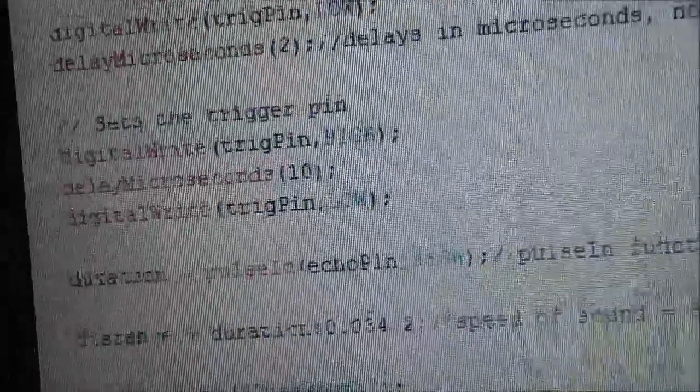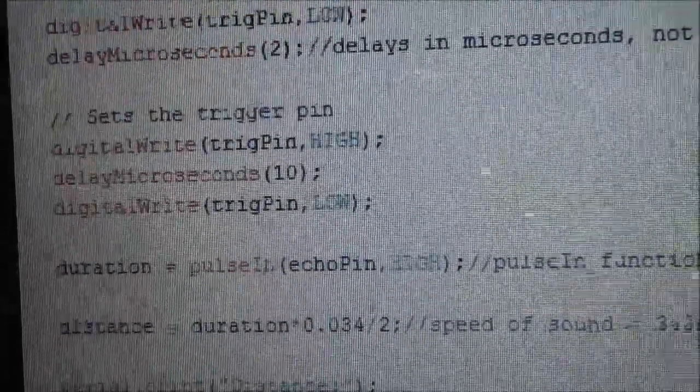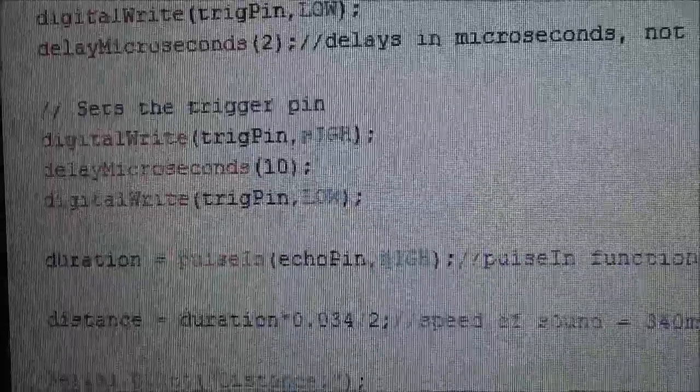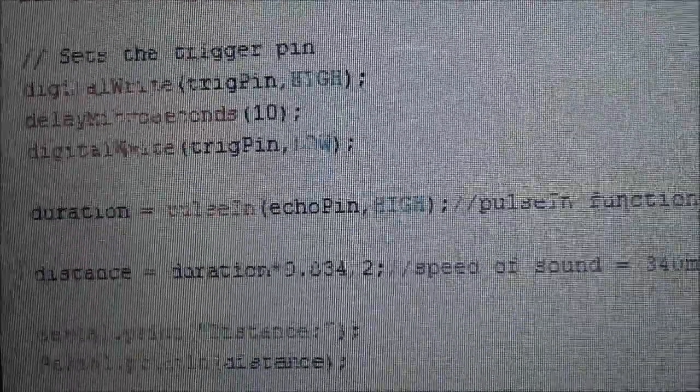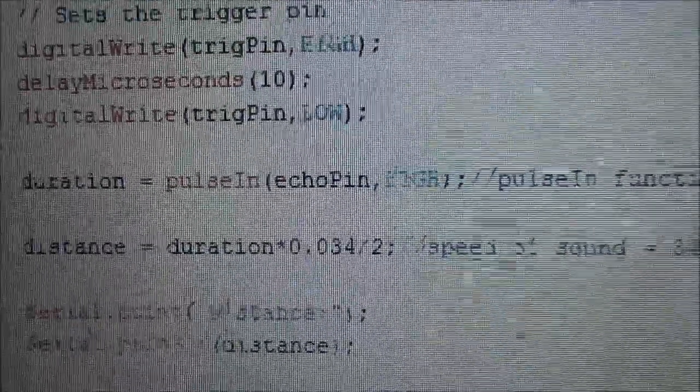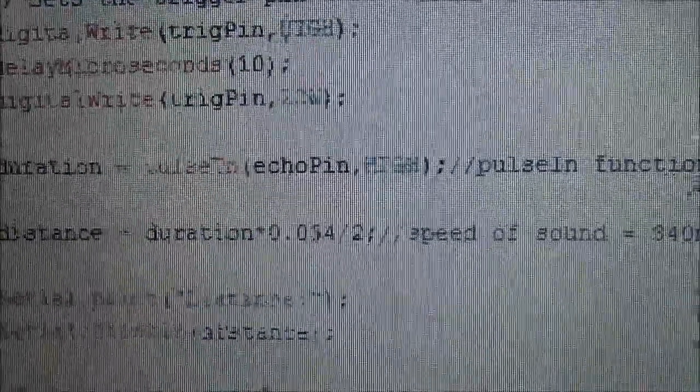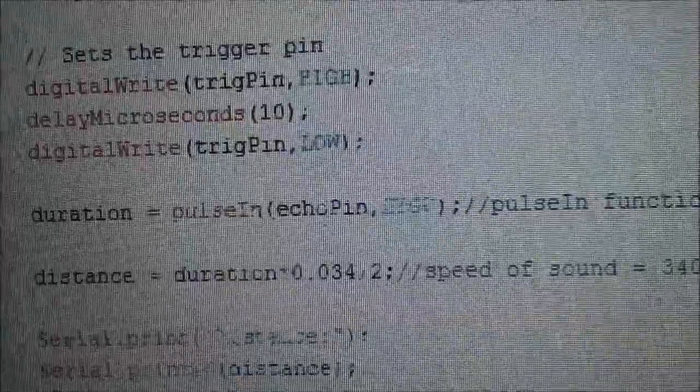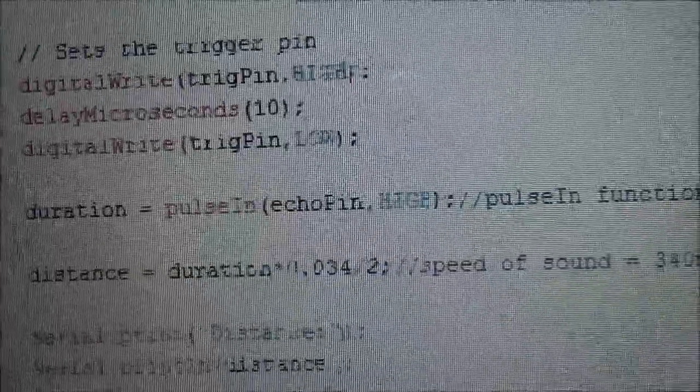The next block of code turns on the trigger pin to a high voltage for 10 microseconds. And after that, the next statement contains the pulse in function, which basically helps us to read the travel time from the echo pin.